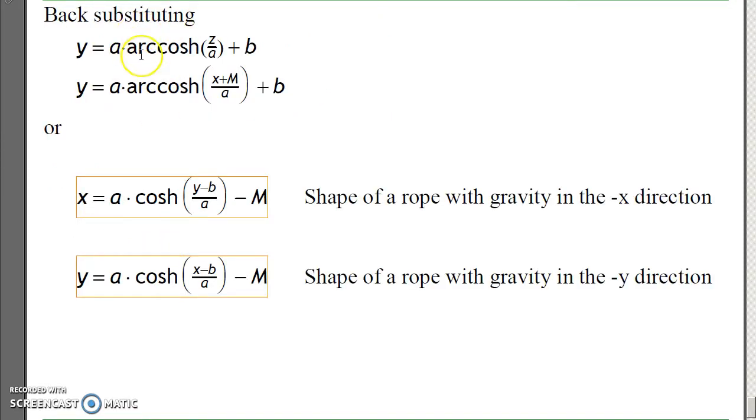Now going backwards, substituting to get z, substituting to get x. This is the generalized form of a hanging chain, where gravity is in the minus x direction. Swap the variables x and y, this is the shape of a hanging chain, where gravity is in the minus y direction.